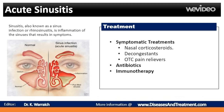Nasal corticosteroids: These nasal sprays help prevent and treat inflammation. Examples include fluticasone (Flonase, Veramyst), budesonide (Rhinocort), mometasone (Nasonex), and beclomethasone (Beconase), among others. Decongestants: These medications are available in over-the-counter and prescription liquids, tablets, and nasal sprays. Use nasal decongestants for only a few days; otherwise they may cause the return of more severe congestion, known as rebound congestion.